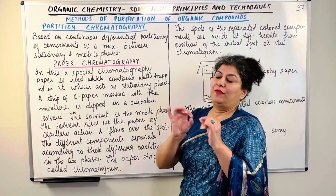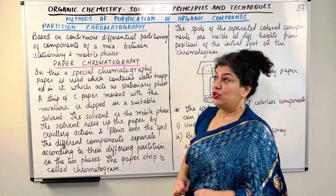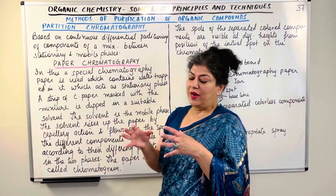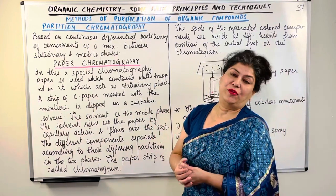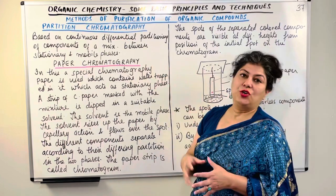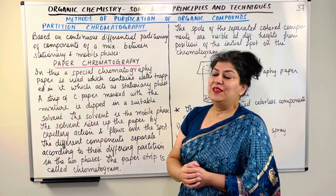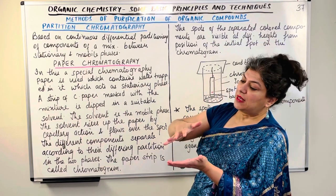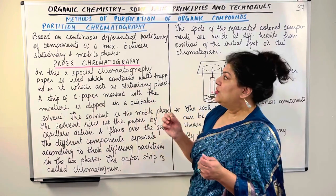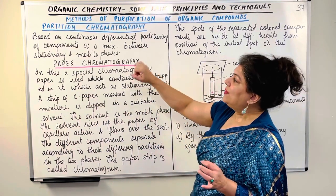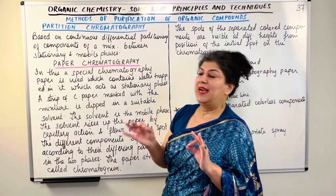I introduced partition chromatography when I told you the difference between adsorption and partition chromatography. Adsorption chromatography is based on the difference in the adsorption capacity of the different components. In partition chromatography, the same concept is used, but the difference is that adsorption continues until the components are separated — based on the continuous differential partitioning of components of a mixture between the stationary and the mobile phases.